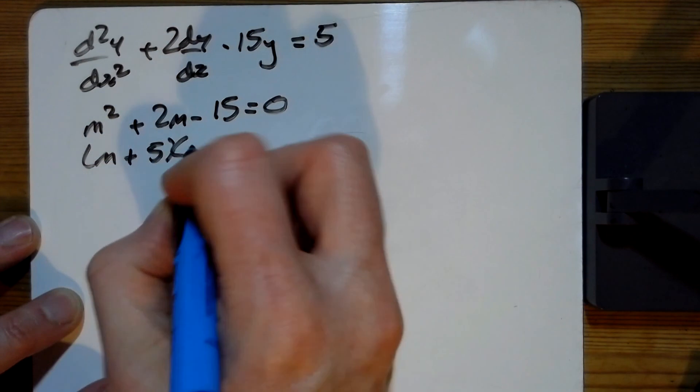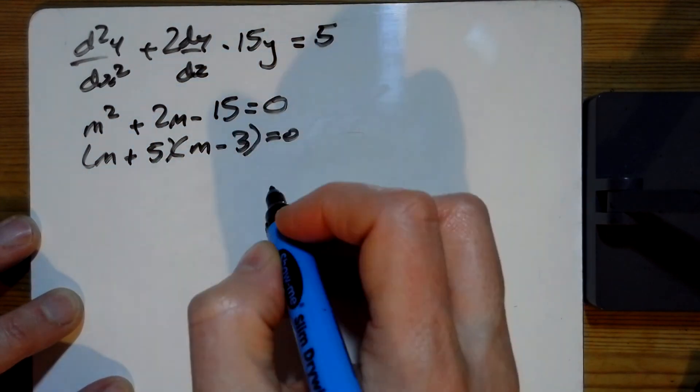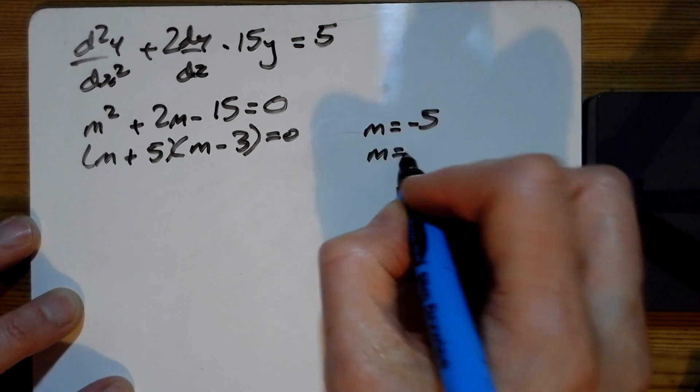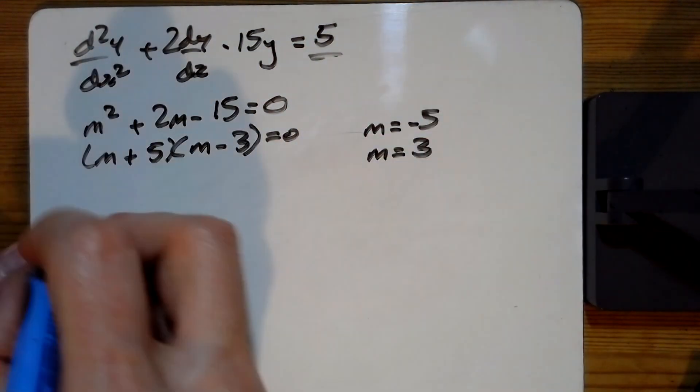So what's that? That's 5 and minus 3. Is that the right way around? Yeah. So m is minus 5 and m is 3, and we've just got a number on this side here.